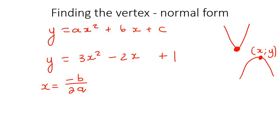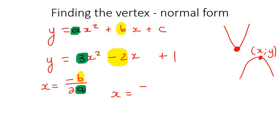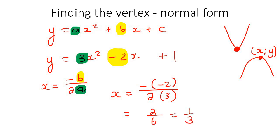What does that actually mean? Well, b is the number in front of the x, so in this scenario it would be negative 2. And a is the number in front of x squared, so that would be 3. So you would say negative — the b is negative 2 — over 2 times a, where a is 3. If you work that out, you get 2 over 6, which simplifies to 1 over 3. So now we have the x value, which is 1 over 3.